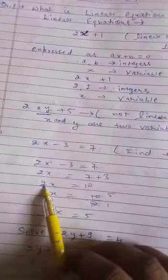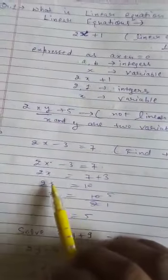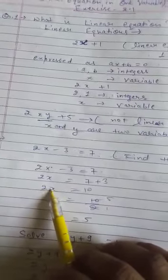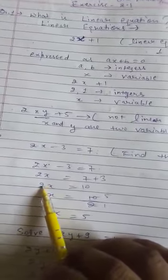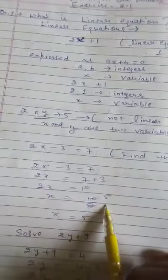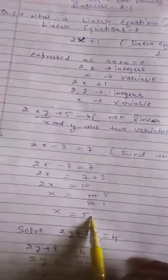Now 2x is equal to 10. Now I have told you we need here just x so 2 also we will shift this side. Here no sign is applied in between these two then it means it is multiply. So here 2 is in multiply, if we will shift right hand side it will be change in division means it will be denominator of 10. 2, 5, 10. X value is 5.